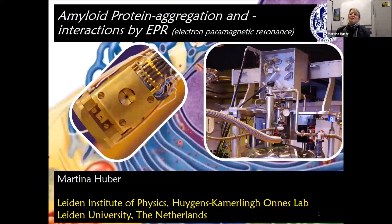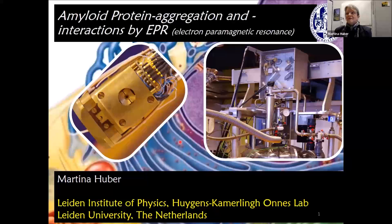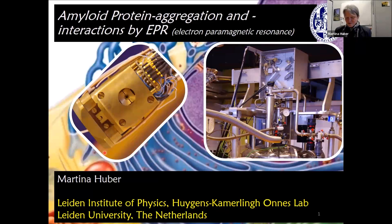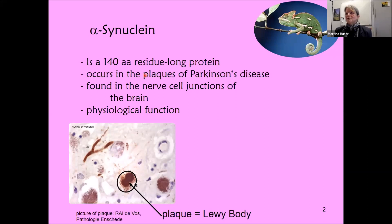Today I want to take the opportunity to talk about what we do about amyloid interaction and aggregation by electron paramagnetic resonance. It's a kind of switch from what we've just heard. The protein becomes a lot more simple than what we've just seen, and most of what I'm going to describe will be done on alpha-synuclein.